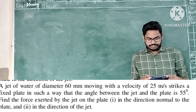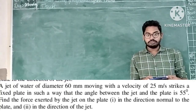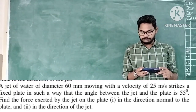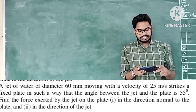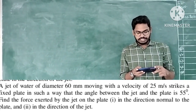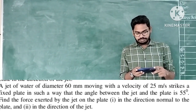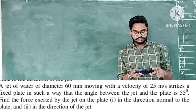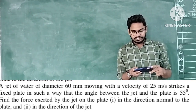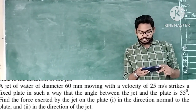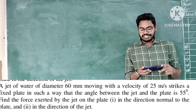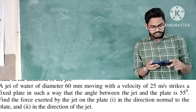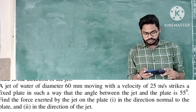A jet of water of diameter 60 mm moving with a velocity of 25 meters per second strikes a fixed plate such that the angle between the jet and the plate is 55 degrees. Find the force exerted by the jet on the plate: first, in the direction normal to the plate, and second, in the direction of the jet.